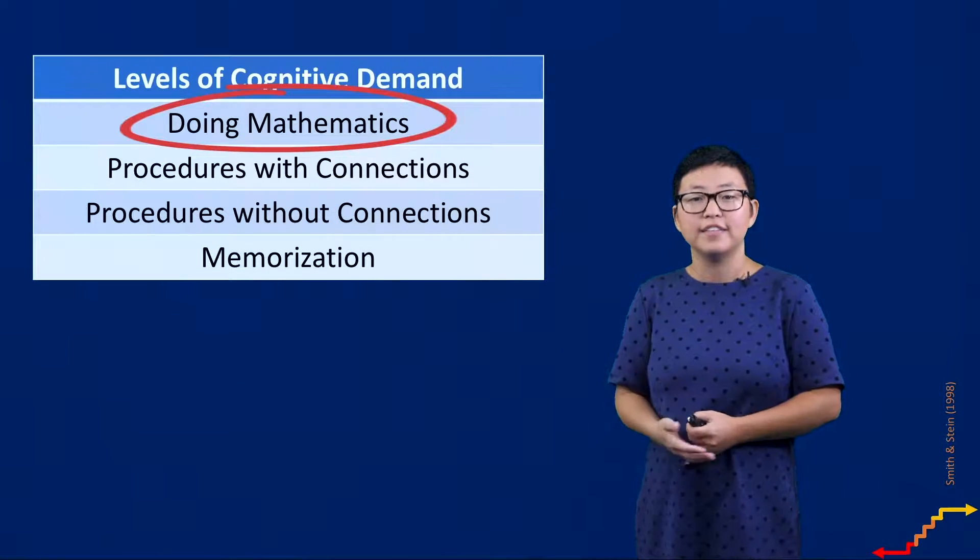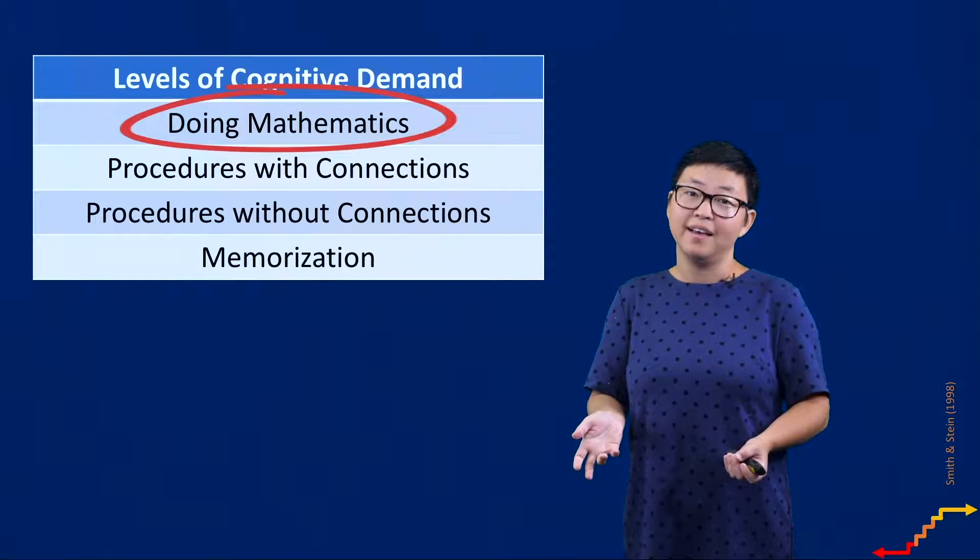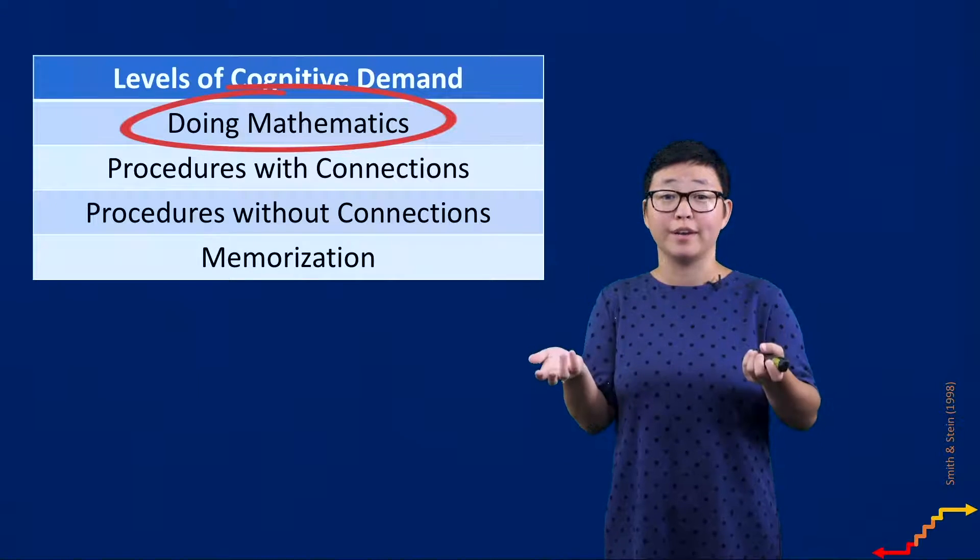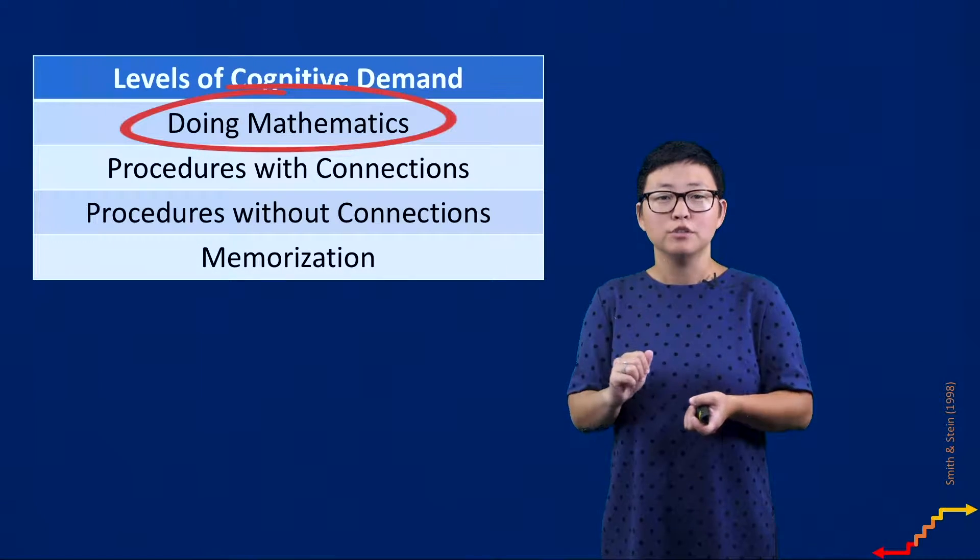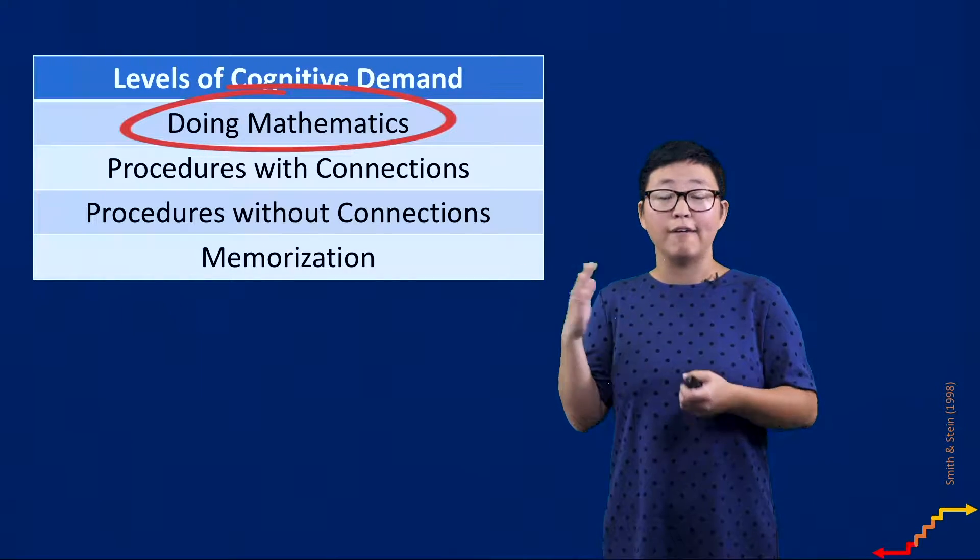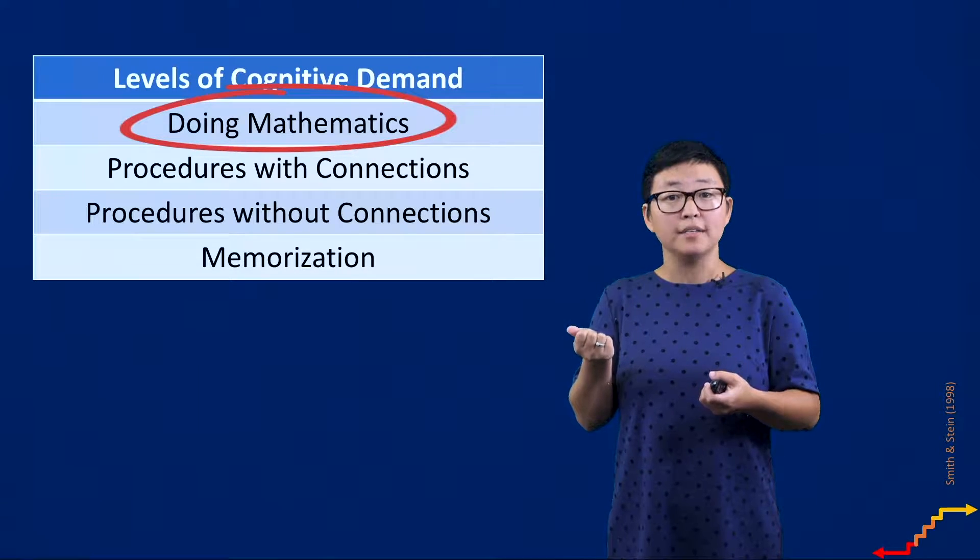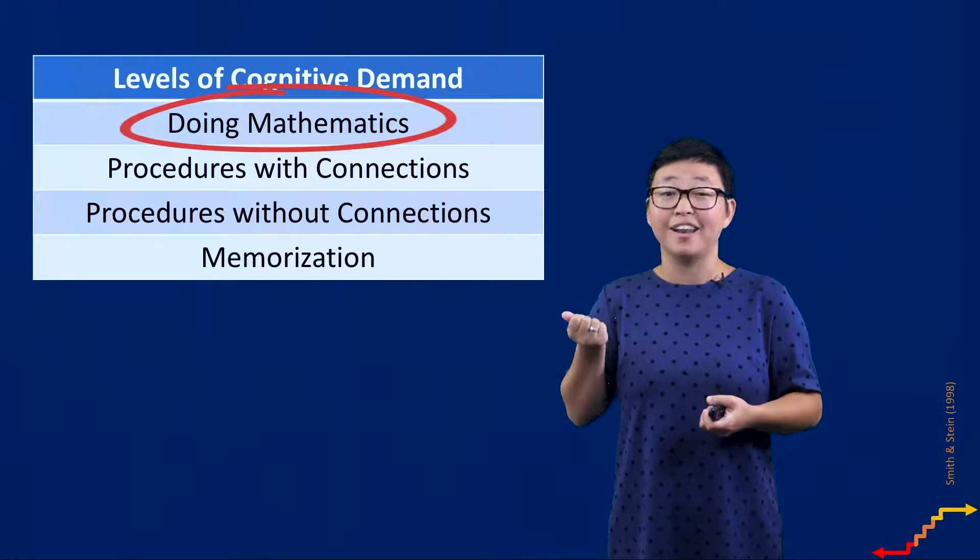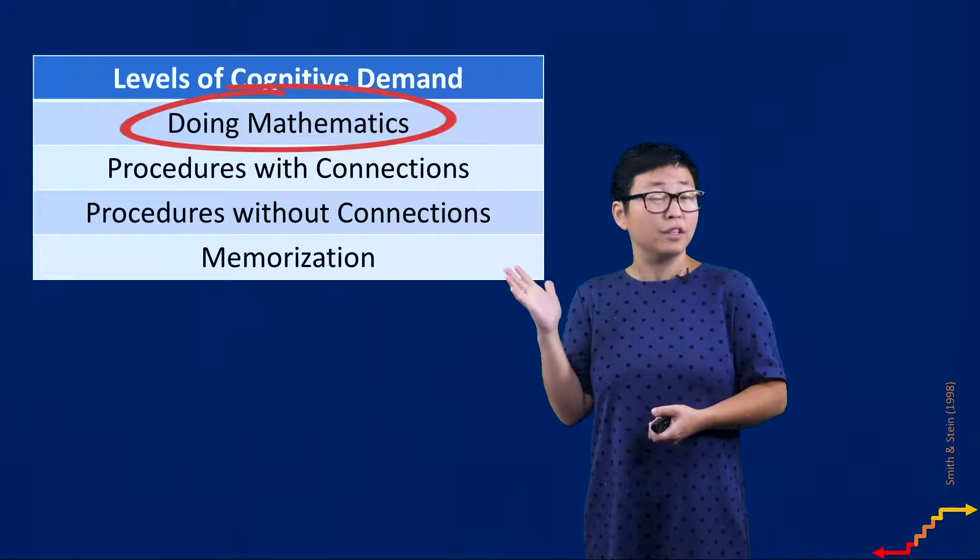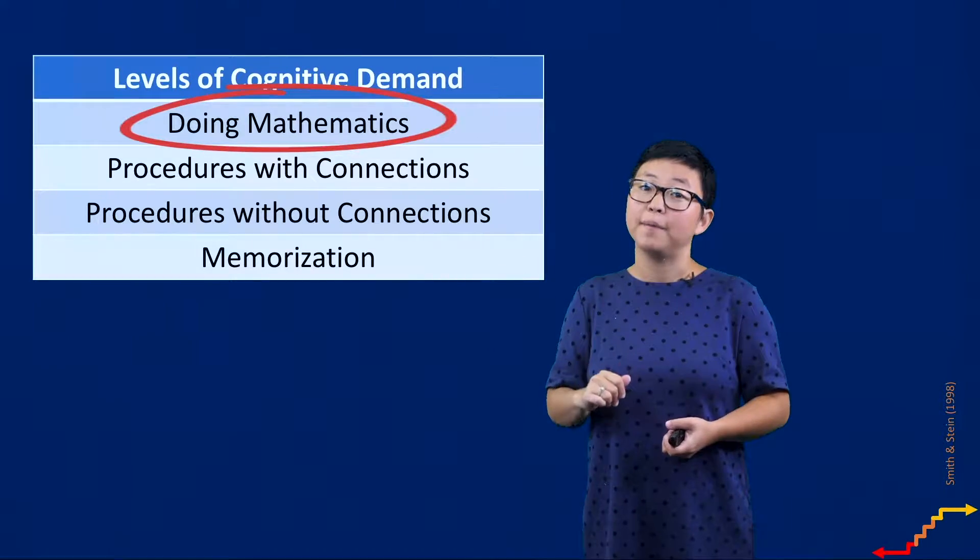And then lastly, we have this idea of tasks that require students to do mathematics. At this level of tasks, students are really demonstrating a lot of their high-level skills. Students are reasoning, they're explaining, they're justifying. Tasks at this level have no clear way and are highly ambiguous, and that's because it requires students to do a lot of cognitive work. Tasks at this level can also produce a little bit of anxiety, and that's because students are working really hard to make sense of them.